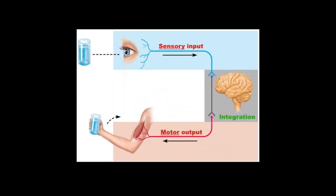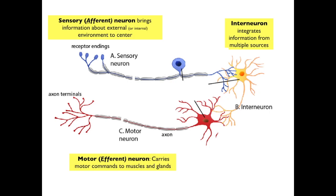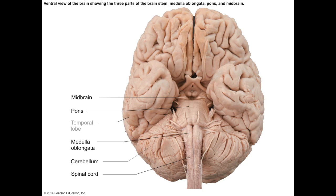Continuing on with the brain, we're always going to keep the big picture in mind — always put everything you're learning here in context of the flow of information: afferent sensory and efferent motor. Here we're going to introduce you to the most advanced integration center: the cerebral cortex.